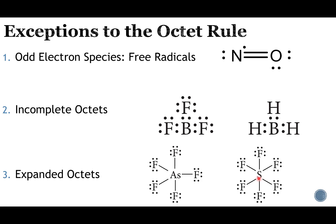Rule number three: we can't expand this to infinity — there are really only two options. The expanded octet options are either touching 10 electrons or touching 12 electrons, those are the only two options. So one example here has 2, 4, 6, 8, 10 electrons, and another has 2, 4, 6, 8, 10, 12 electrons. We wouldn't see anything more than that.